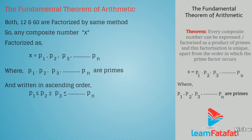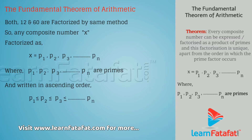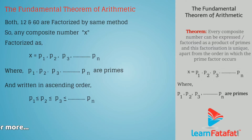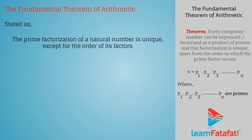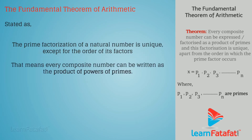These primes are written in ascending order as p1 ≤ p2 ≤ p3 ≤ ... ≤ pn. The Fundamental Theorem of Arithmetic states that the prime factorization of a natural number is unique, except for the order of its factors. That means every composite number can be written as the product of powers of primes.